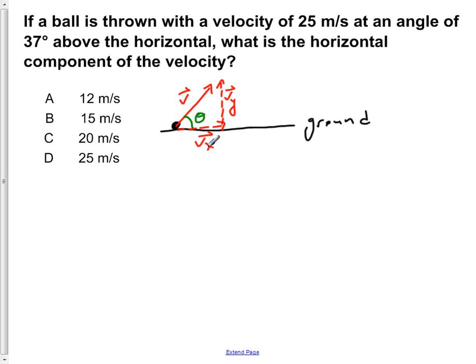Using what you know about SOH CAH TOA, you see that the best choice would be to use cos of theta is equal to the adjacent, which is vx, over the hypotenuse of the triangle, which is v. From this you can tell if we multiply both sides by v...